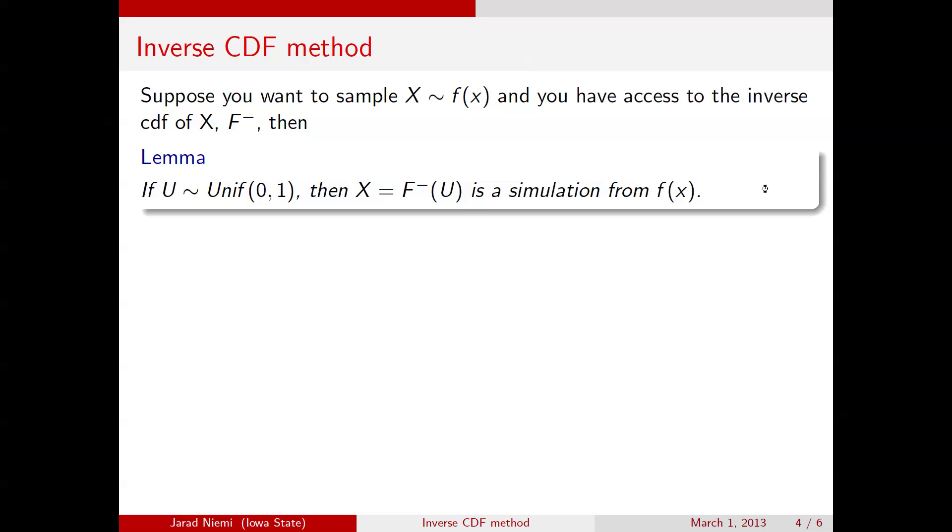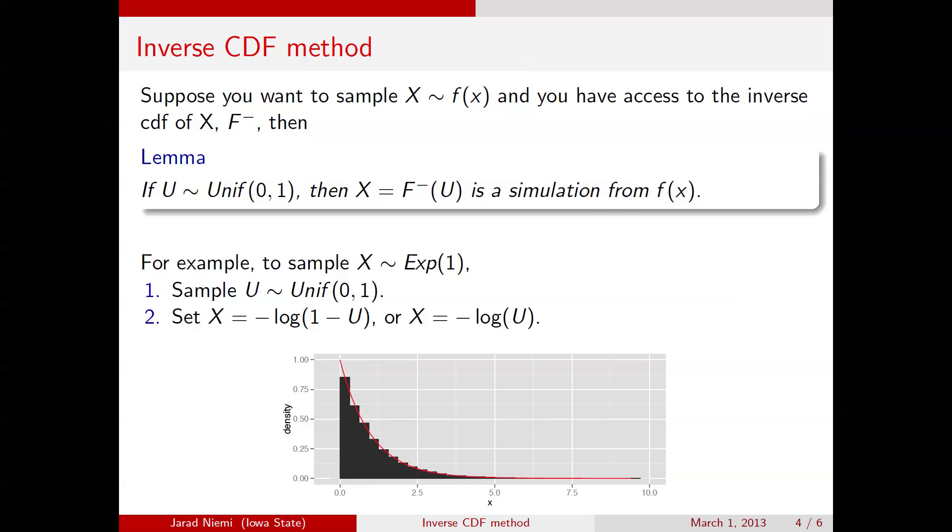All right, so it sounds simple enough. Here's an example. We want to sample from an exponential 1, so we take a uniform on 0, 1. We calculate this quantity, negative log of 1 minus u, and here we have a histogram of those realizations, and the red line is the actual density for an exponential 1 distribution.